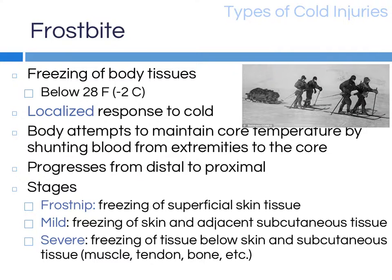Frostbite progresses in stages from frost nip, or superficial, to mild to severe. Frost nip is superficial frostbite involving only the superficial skin. Mild frostbite is slightly deeper, involving the skin and directly adjacent subcutaneous tissue. Severe frostbite involves freezing of the skin, subcutaneous tissue, and deeper tissues including muscles, nerves, bones, tendons, and ligaments.